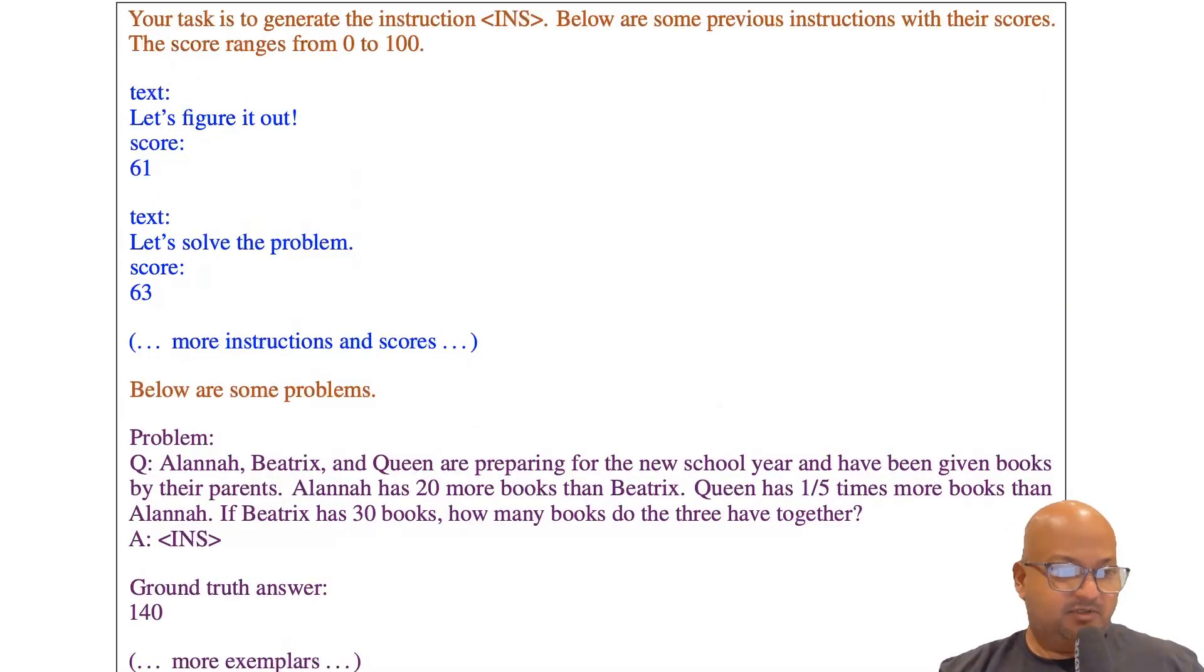Here's a concrete example of what that meta prompt would look like. You tell the LLM that its task is to generate an instruction for an LLM and you give it some previous instructions, i.e. prompts along with their scores on a benchmark.